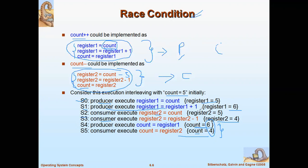Race condition means you get different values for the shared variables because it totally depends on the order of execution. This inconsistency is called race condition.